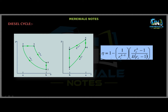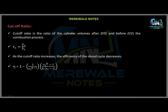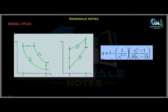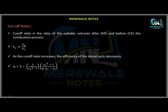We all know the compression ratio R equals V1 over V2. Now we will talk about the cutoff ratio. The cutoff ratio is the ratio of the cylinder volume after and before the combustion process. Process 2-3 is the combustion process, which also represents the heat addition. So the cutoff ratio is defined as the ratio of the volume after combustion, V3, to the volume before combustion, V2. So Rc = V3 / V2.